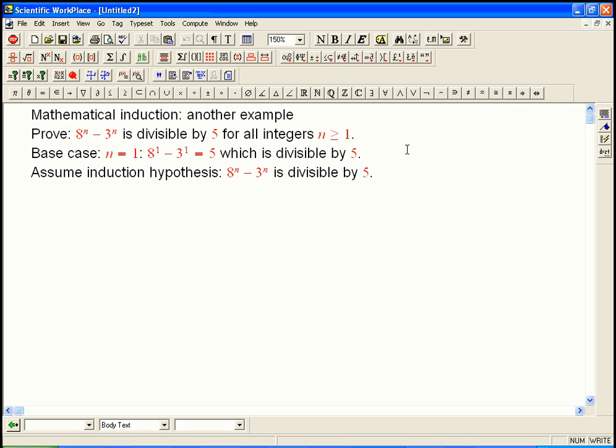So now we want to prove the n+1 version of that statement. 8^(n+1) - 3^(n+1) is also divisible by 5. So what we want to do is take this thing that we want to analyze, and let's try to relate it to the previous case.